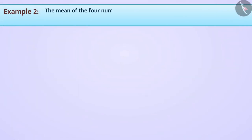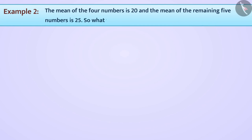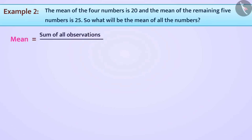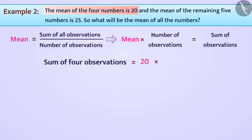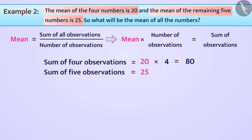Next example. There are 9 numbers provided. Of these 9, the mean of 4 numbers is 20 and the mean of the remaining 5 numbers is 25. Can you derive the mean of all the numbers? We know that mean multiplied by number of observations equals sum of all observations. So sum of 4 observations is 20 × 4 = 80, and sum of 5 observations is 25 × 5 = 125.